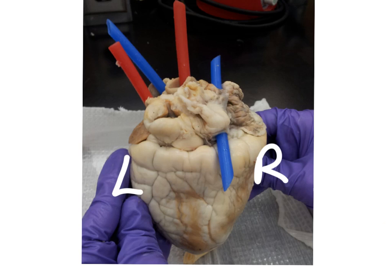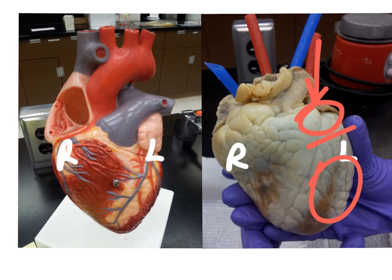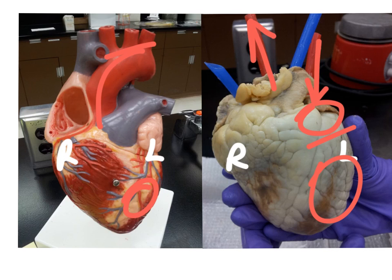Here is the dorsal view again — left and right have switched — and we can see this is the deoxygenated blood returning from the lungs via the pulmonary vein. Blood returning from the lungs via the pulmonary vein will then go into the left atria, through the bicuspid valve, and then into the left ventricle. It then leaves the heart and goes up and out the aorta.